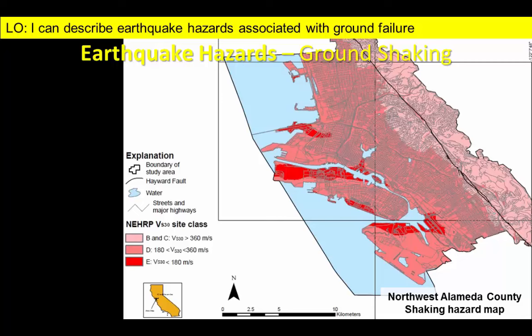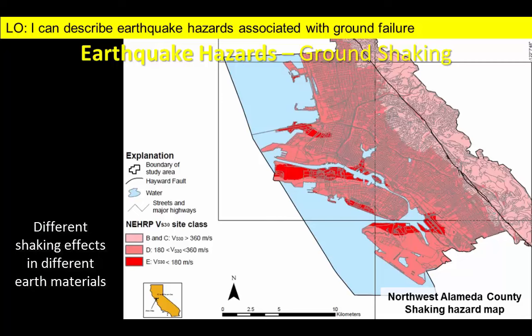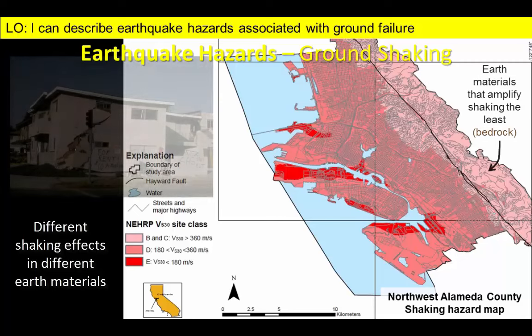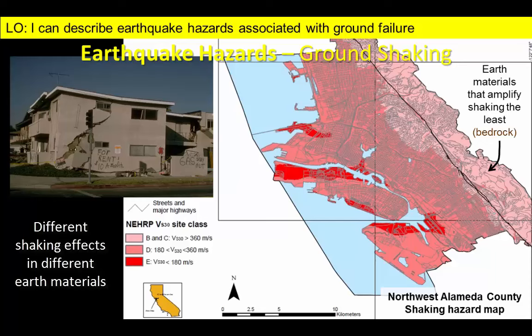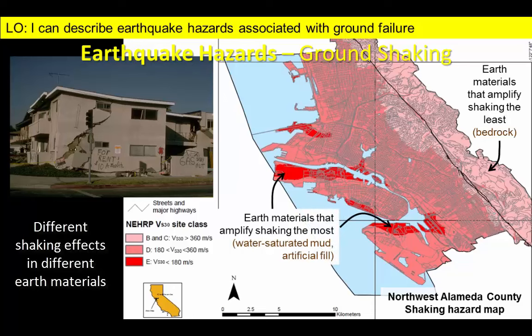The same earthquake will produce different shaking effects in different earth materials. Bedrock typically produces more frequent, smaller vibrations — the type of shaking that is more likely to damage shorter structures such as two-story homes. Weaker materials such as muddy soils can amplify ground shaking and produce larger, low-resonance vibrations that are more dangerous for multi-story structures.